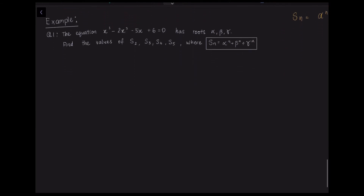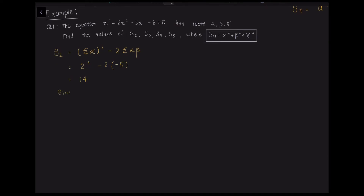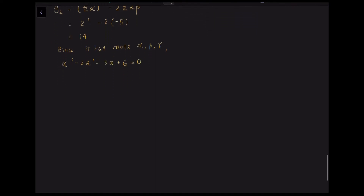Let us understand this through an example. We have x³−2x²−5x+6 = 0, and we need to find S₂, S₃, S₄, and S₅. First, S₂ = (Σα)² − 2(Σαβ). We know Σα = 2 and Σαβ = −5, so S₂ = 4+10 = 14. The cubic has roots α, β, γ, giving three equations by substituting each root.